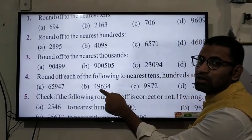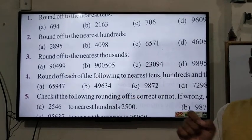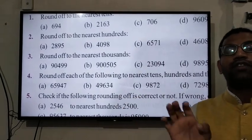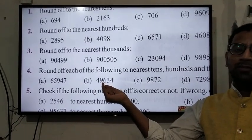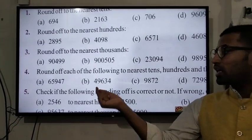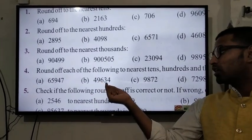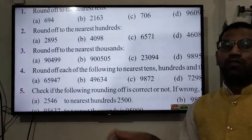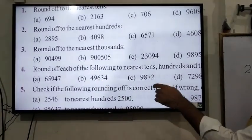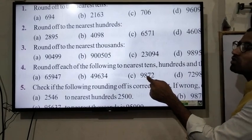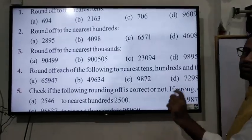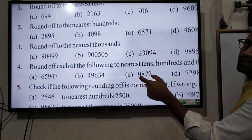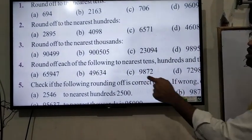65,947 is between 60,000 and 70,000, and here is 5,947, so 65,947 rounds to 70,000. Next: 49,634 is between 40,000 and 50,000. Here is 9,634, which is more than 5,000, so 49,634 rounds to 50,000. Example: 9,822 is between 0 and 10,000. Here is 9,822, that is more than 5,000, so it rounds to 10,000.